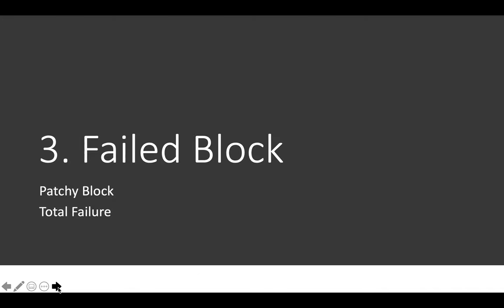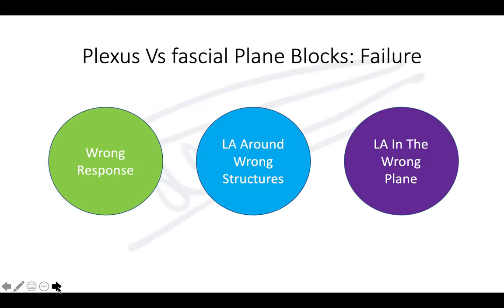The third consideration is failed, patchy, or total block failures — you have to accept them. The more you do, the more failures you will encounter, and that's not a major issue. Looking at plexus and fascial plane blocks, failures happen because you did not get the right response and still injected local anesthetic, you injected around the wrong structure, or the local anesthetic was deposited in the wrong plane.